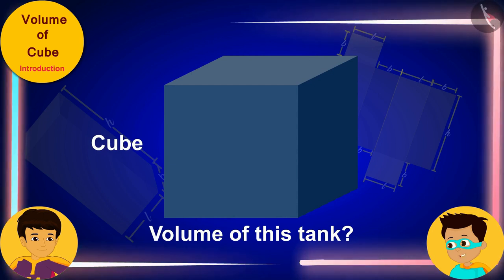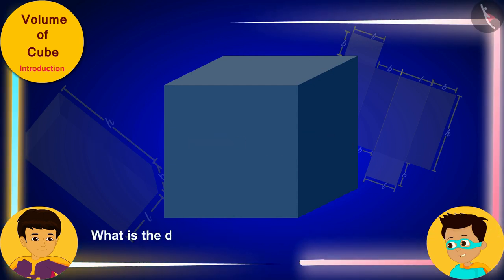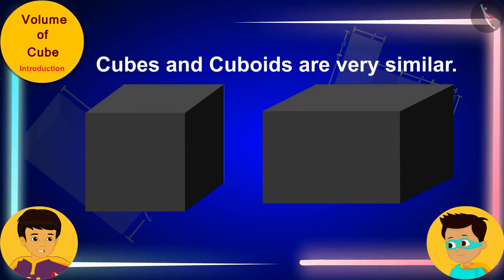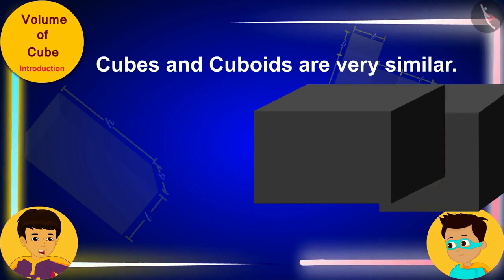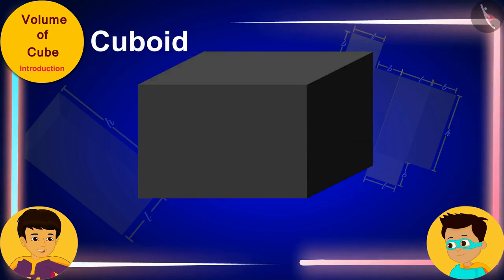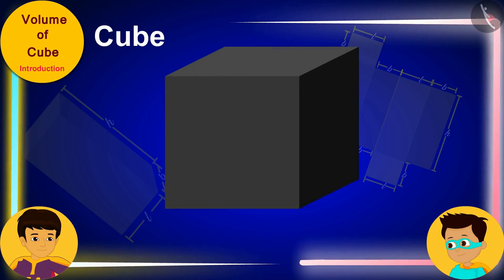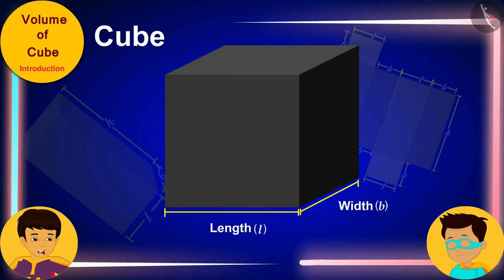Don't worry. Can you tell me what is the difference between a cuboid and a cube? Hmm. Cubes and cuboids are very similar. I know only one difference among them. The length, width and height of the cuboid are different, while the length, width and height of the cube are equal.